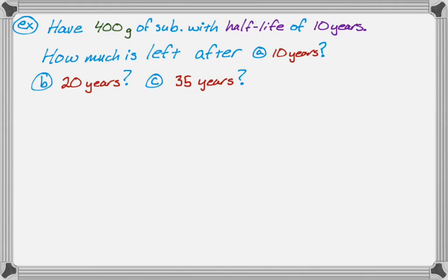Example: we have 400 grams of some substance with a half-life of 10 years, and we want to know how much is left after 10 years, 20 years, and 35 years. Parts A and B you can kind of intuitively figure out, so we'll see how the equation works. First thing we want to do is write down the half-life equation for this particular problem.